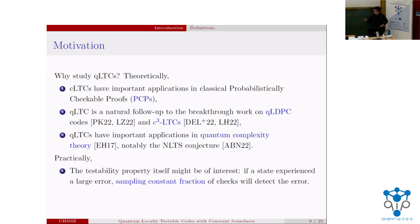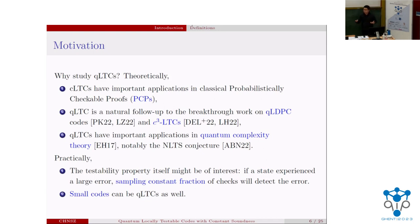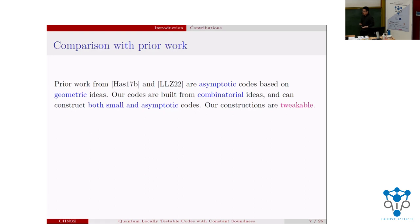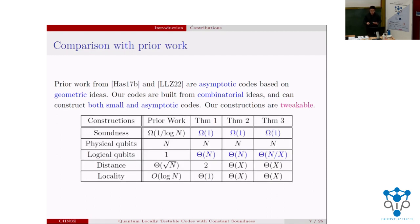Practically, the testability property itself may be useful: if a state experienced a large error, sampling a constant fraction of the checks gives indication of how large the error is. Local testability is not purely asymptotic — small codes can be LTCs too. Quantum LTC is not widely studied; there are only two prior constructions, one by Hastings and one by Leverrier, Londe, and Zemor. They're asymptotic codes based on geometric ideas. Our codes are built from combinatorial ideas, constructable both for small and asymptotic regimes, and are highly tweakable.